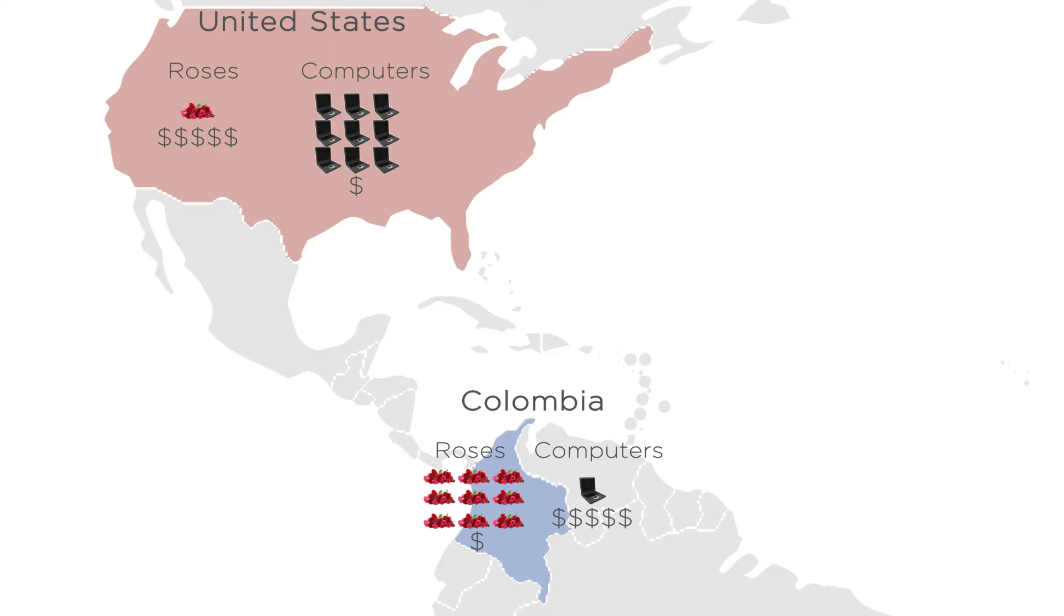As a result, if the U.S. wanted to produce roses instead of computers, it would have to give up a lot of computers. It would have to take people who are really good at making computers and have them set up expensive greenhouses. It wouldn't end up with all that many roses, but now there are a lot of computers that aren't getting produced anymore. And if Colombia wanted to produce computers instead of roses, it would have to give up a lot of roses. It would have to take people who are really good at growing roses and get them to work on making computers. It wouldn't end up with that many computers, but now there are a lot of roses that aren't getting produced anymore.